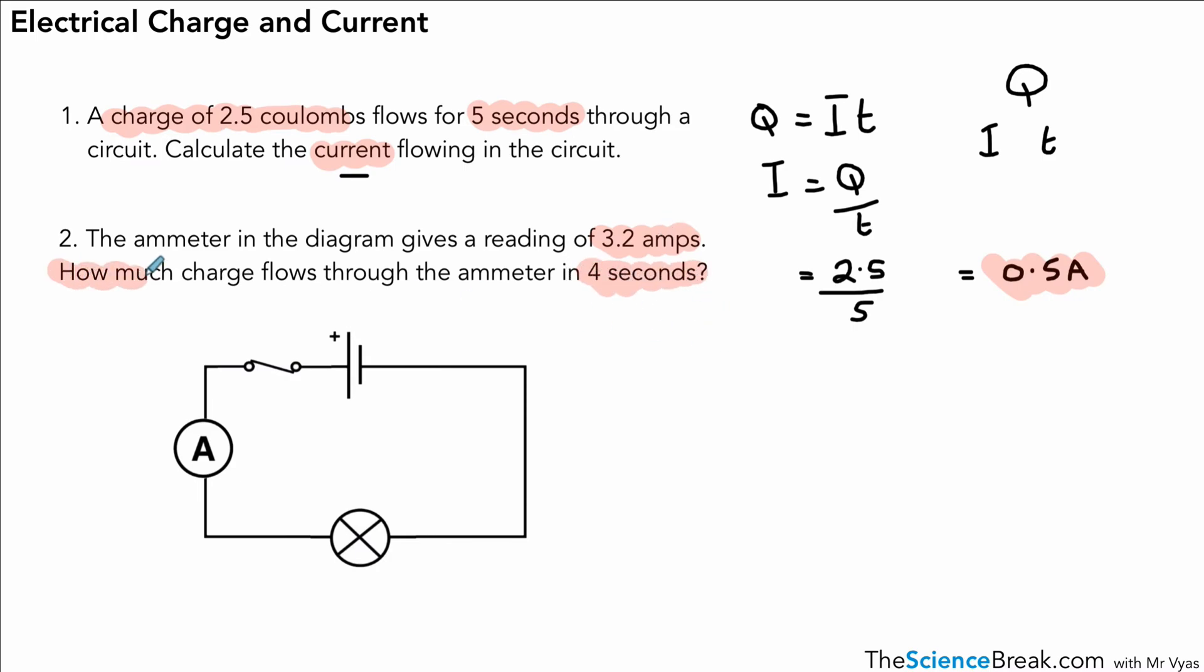And remember, amps is a measure of current. So we're looking at measuring the charge or calculating the charge. So what we do is, very simply, use our formula, Q equals I T.